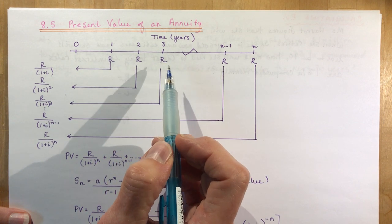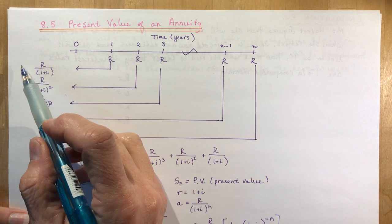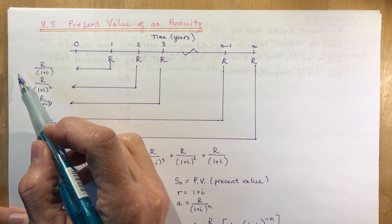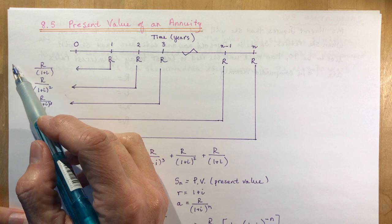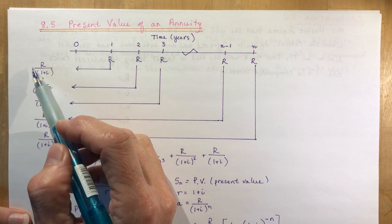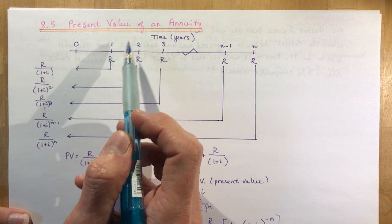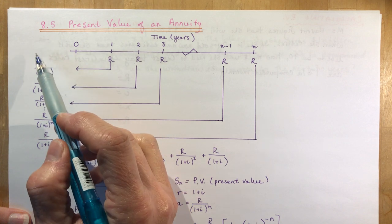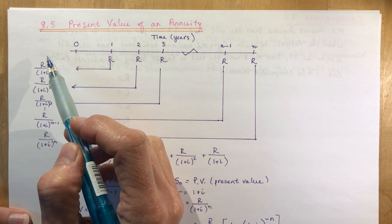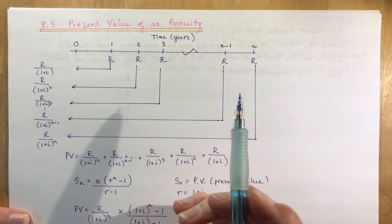I'm not going to do 100 times 30 times 12 and deposit that today because of the time value of money. This money you're putting in today is going to be earning some interest along the way, so you don't have to put in as much today.